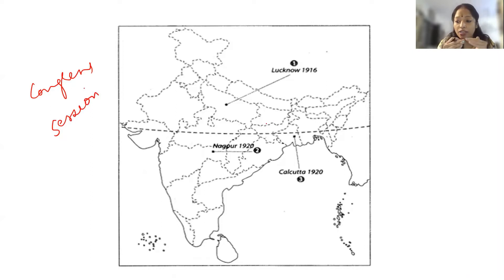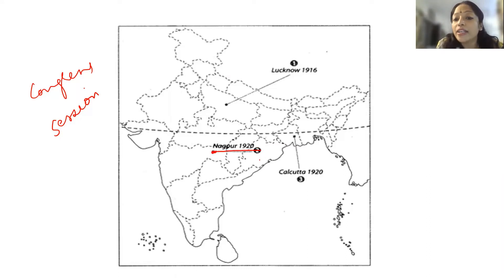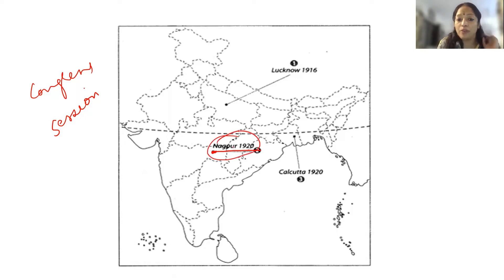We will start in chronological order, from 1920. They can ask you — they will mark this place and ask you to identify the place where the Congress session was held in the year 1920. The answer is Nagpur — you need to write the name Nagpur.